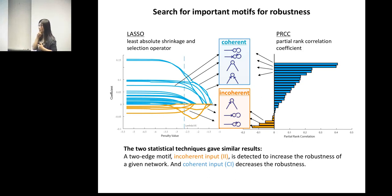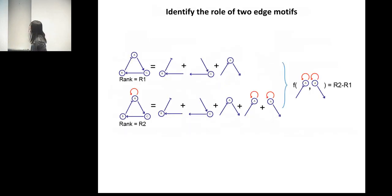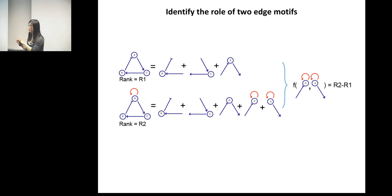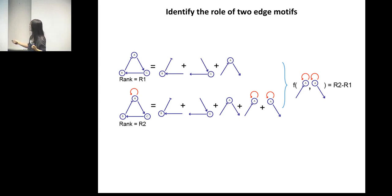If one node has just one input, there is no coherent or incoherent classification. A two-edge motif with one input and one output, for example, is simply one of 28 possible two-edge motifs, and in our analysis does not play a significant role in changing the robustness of the oscillator.